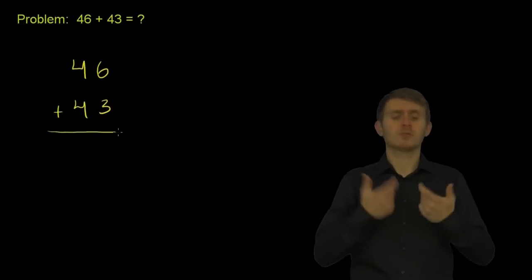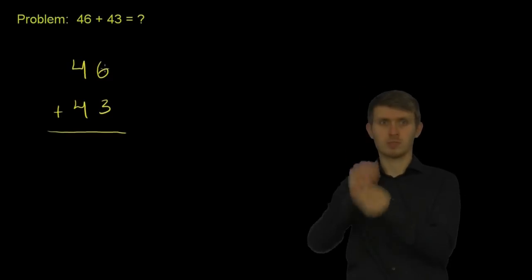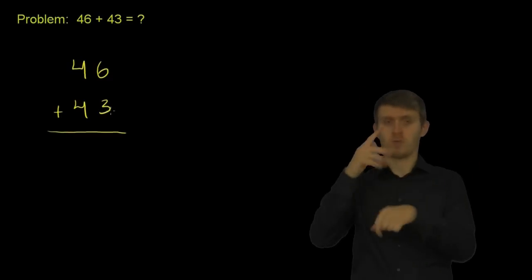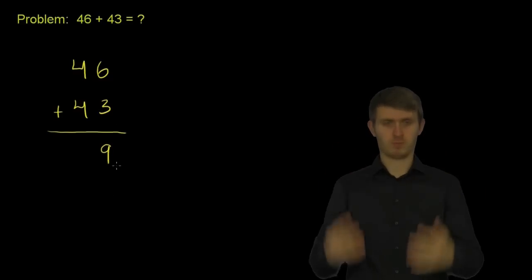What we do here is we just first look at the ones place. We literally have six ones plus three ones, or you could say six and three, and six plus three is just nine. Six plus three is nine, so we have nine ones.